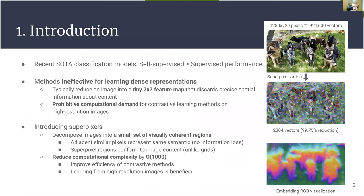These days, it's well known that self-supervised methods tend to outperform or at least equal the performance of plain supervised models on the classification task. Though these methods are kind of inefficient for learning dense representations, as they reduce the entire image into a 7x7 feature map that discards precise spatial information about what's in the image. And it also becomes prohibitively expensive to optimize over millions of vectors.